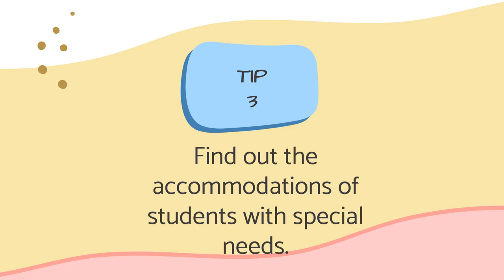Tip three: Find out the accommodations of students with special needs. Your class schedule usually indicates which students have special needs. Usually the case manager will send you a snapshot of their accommodations, which should list if they have preferential seating. Take these accommodations into consideration when creating your seating chart. Some students might need to be placed up front or near the teacher as part of their IEP or 504.